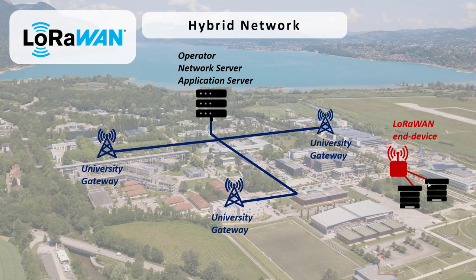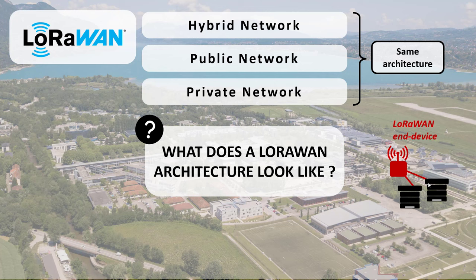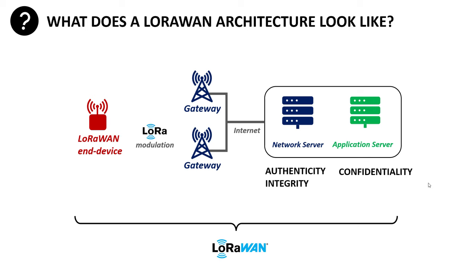Whatever architecture you use — private, public, or hybrid — the LoRaWAN architecture is exactly the same. On the left you have the LoRaWAN device; it sends data using LoRa modulation to the gateway. The gateway is the link between the LoRaWAN modulation world and the IP world, and it connects to the server. The network server handles authenticity and integrity; the application server handles confidentiality.